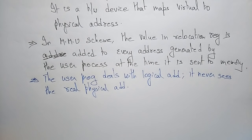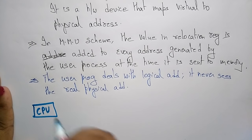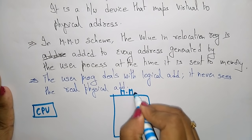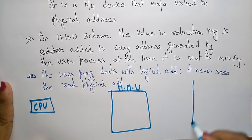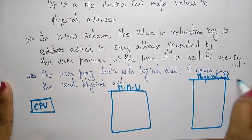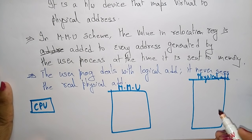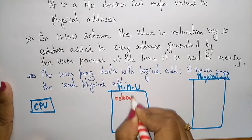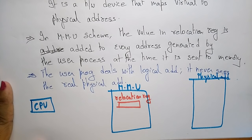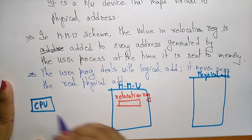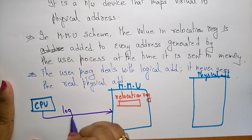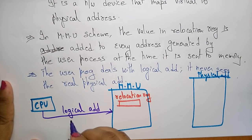Let me explain the MMU scheme with a diagram. Here we have the CPU, the Memory Management Unit, and the physical memory unit. Inside the MMU there is a relocation register. The CPU wants to send data, so it generates a logical address — let's say the logical address is 346.